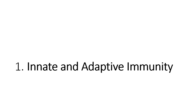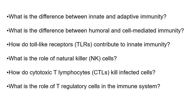First section: innate and adaptive immunity — the first topic you learn in immunology. A key question: what is the difference between innate and adaptive immunity? Innate immunity is the body's first line of defense, providing a rapid and non-specific response, while adaptive immunity is specific, develops slowly, and involves memory cells for long-term protection.